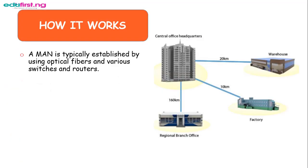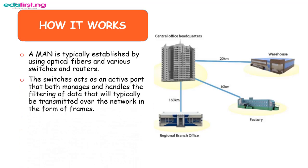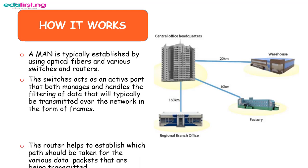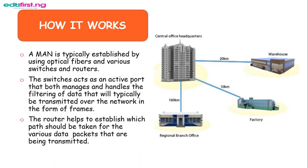A metropolitan area network is typically established by using fiber optic wires and various switches and routers. The switches act as active ports that both manage and handle the filtering of data, which is typically transmitted over the network in the form of frames. The router helps to establish which path should be taken for the various data packets being transmitted. So the switches handle and filter the data, while the router determines which path the data should take.